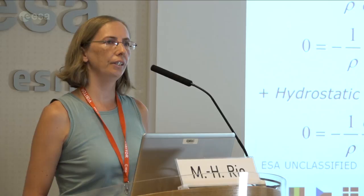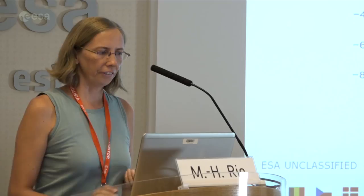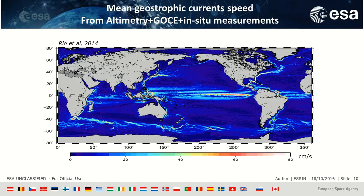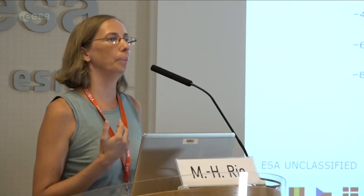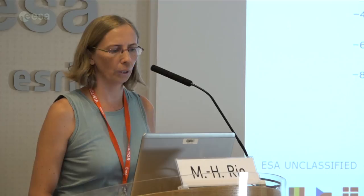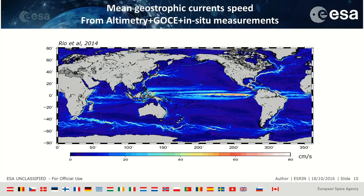This shows the geostrophic circulation in the ocean as measured from observation only — from altimeter data, gravity data, and in situ measurements — a product of synergy between different observations. This gives us a picture of the mean circulation in the ocean where you can recognize the main ocean surface currents: the Kuroshio, the Gulf Stream, the Malvinas current, the Leeuwin current, the Agulhas current, the Antarctic Circumpolar Current, and the equatorial current system. Velocities range from 0 to 80 cm per second.